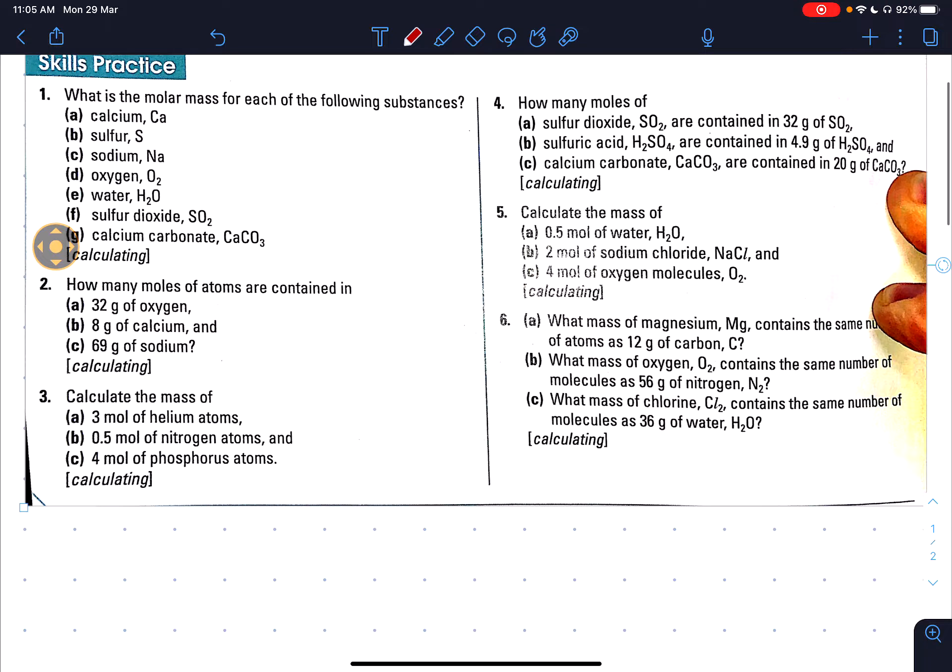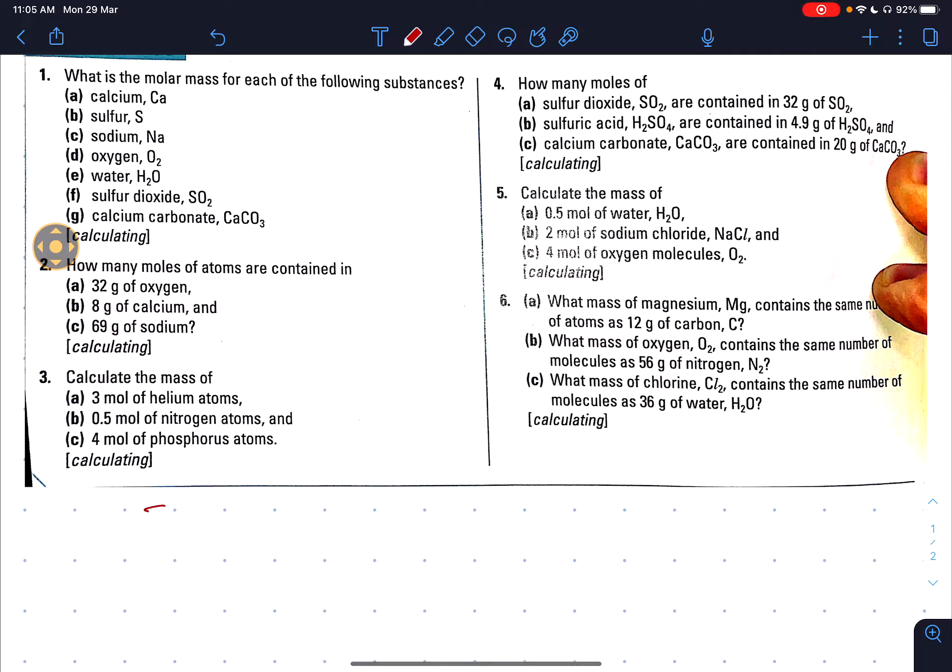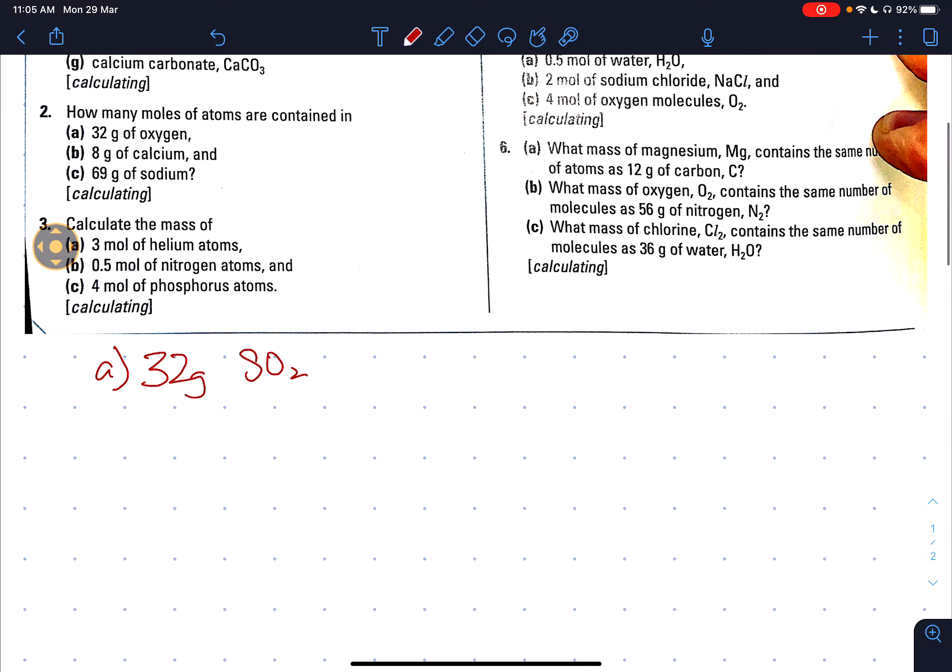4a: How many moles are there in 32 grams of SO2? So firstly we must know two things: either the equation where moles equals mass divided by Mr or molar mass, or you can use the ratio. So let's use the ratio method first. So molar mass of SO2...